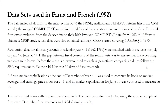The data sample included all firms at the intersection of NYSE, Amex, and NASDAQ returns files from CRSP and the merged CompuStat annual industrial files. Firms in the financial sector were excluded due to their high leverage. CompuStat data from 1962 to 1989 were obtained, and CRSP stock return data were also obtained, though CRSP only started covering NASDAQ in 1973. Accounting data for fiscal year ends in calendar year T-1 were matched with returns for July of year T to June of year T+1, ensuring accounting variables were known before the returns they were used to explain.